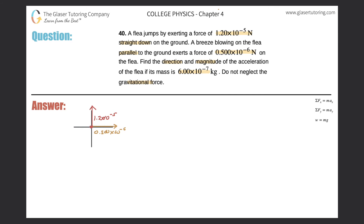The problem says do not neglect the gravitational force. In almost all problems involving y-dimensions, you do not want to forget about gravitational force. So there's another vector pointing down representing the weight of the flea, found by taking its mass — 6.00×10⁻⁷ kg — multiplied by 9.80 m/s². That gives a weight of 5.88×10⁻⁶ N.